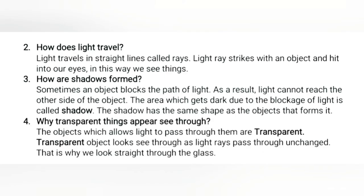Question number 2: how does light travel? Light travels in straight lines called rays. Light rays strike an object and reach our eyes. In this way, we can see things.